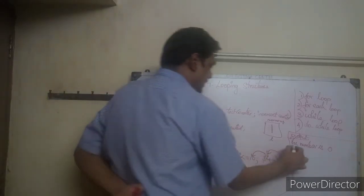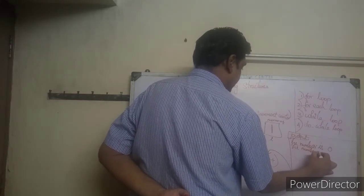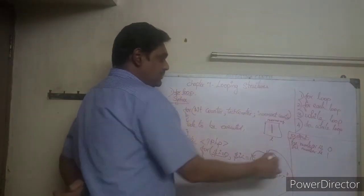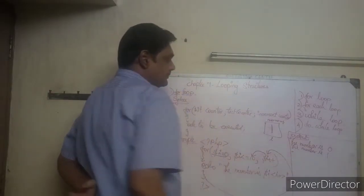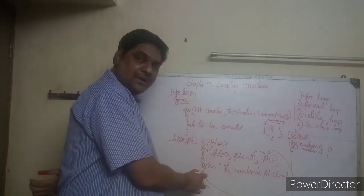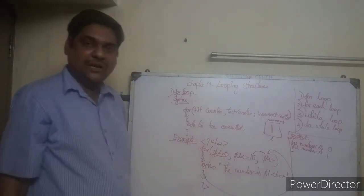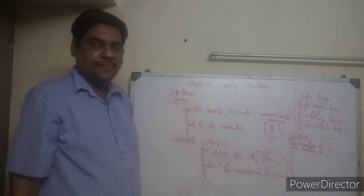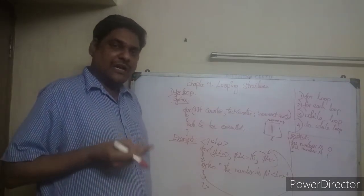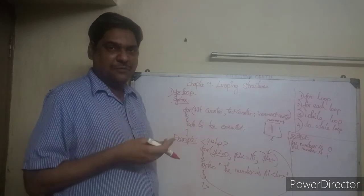So 'The number is $i' — it will print 'The number is 1' and come to the next line. Then close curly braces again, and it will come back to the increment counter. `i` is incremented again — `i` becomes 2.